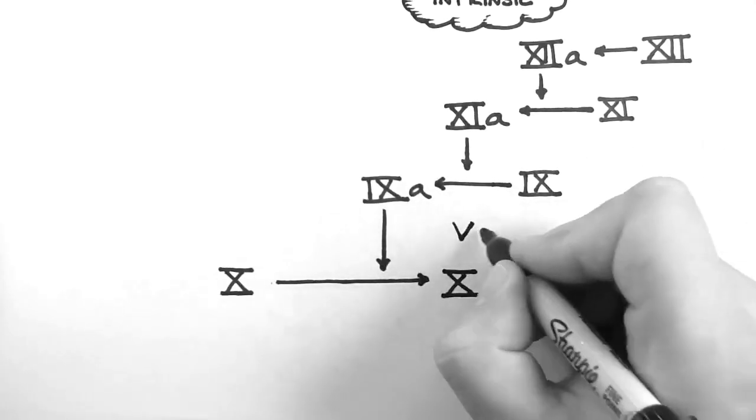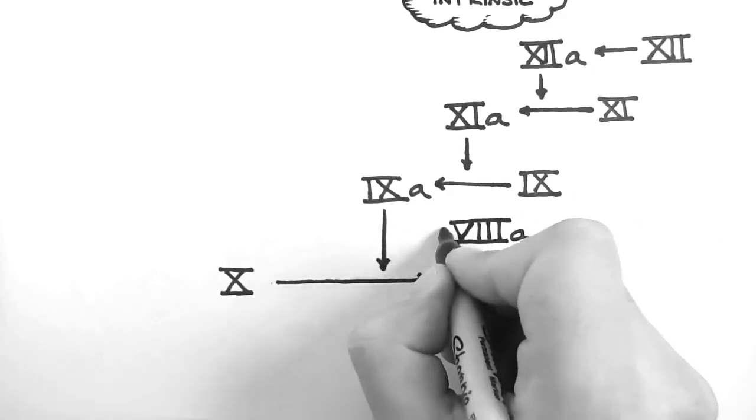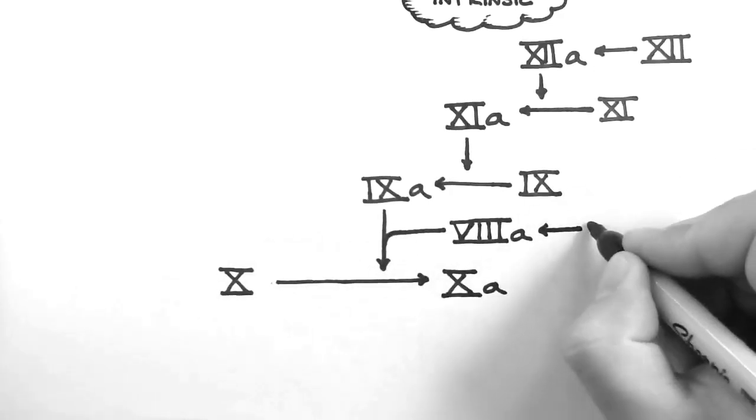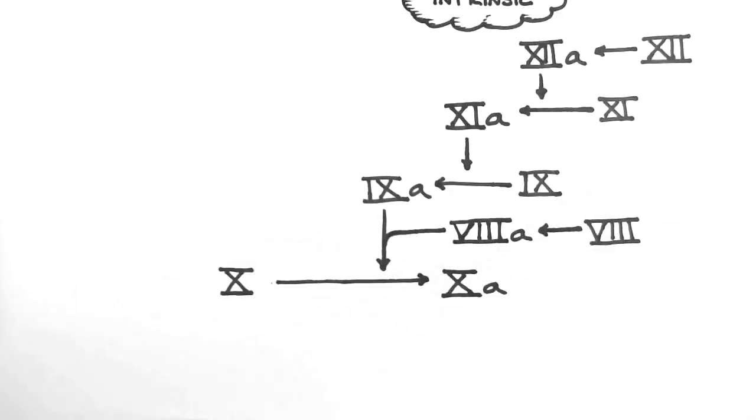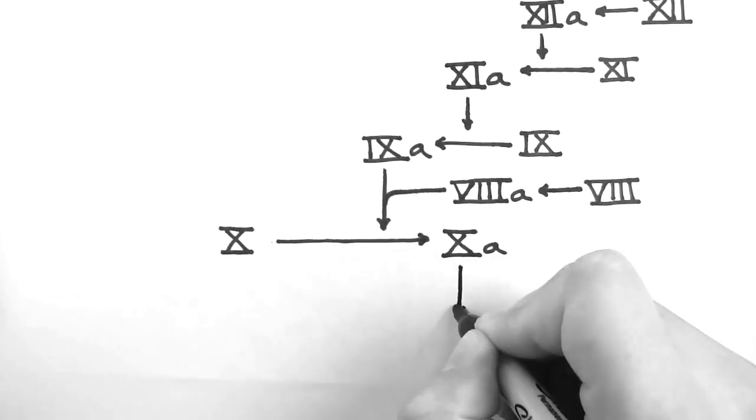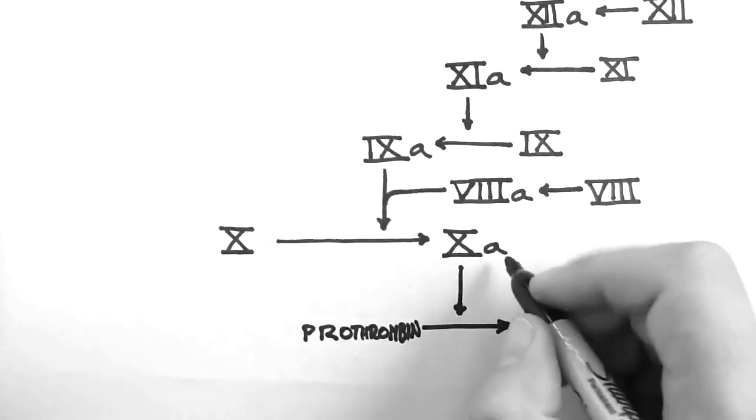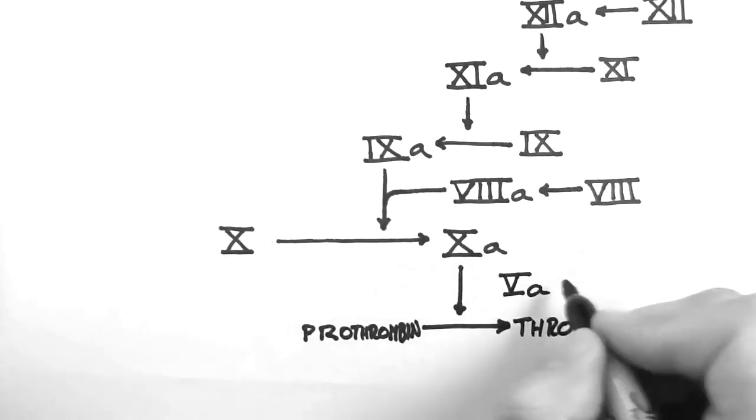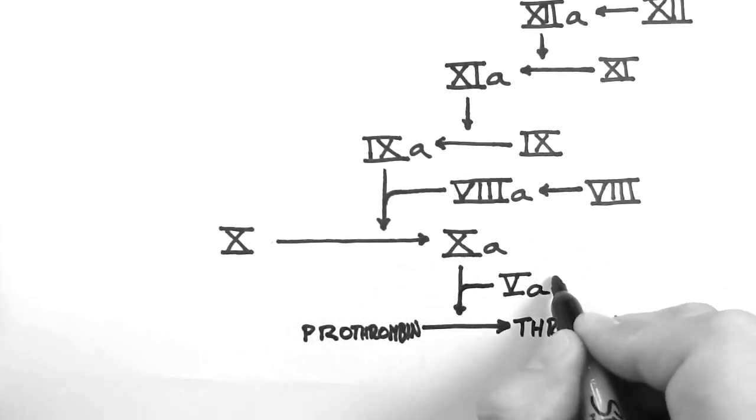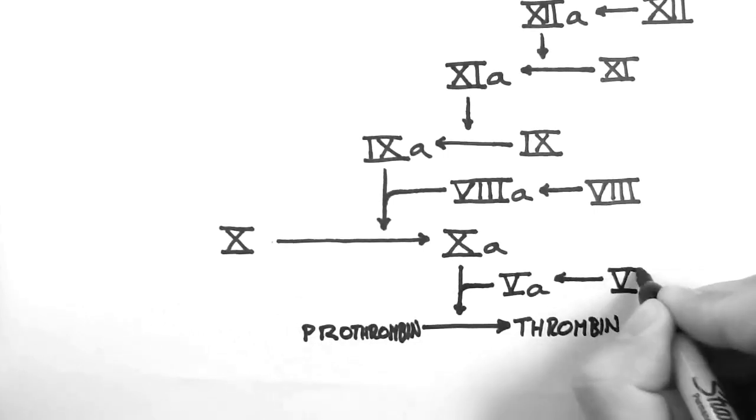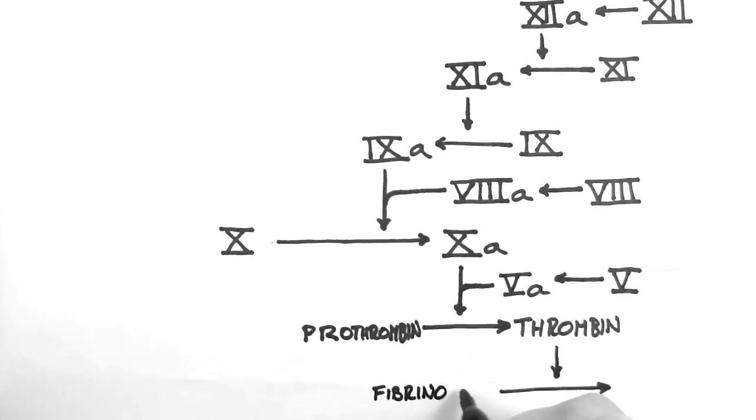But it does this with the help of factor 8a, which has been created from factor 8. Factor 10a can then convert prothrombin to thrombin, and it does this with the help of factor 5a, which of course has been produced from factor 5. Thrombin then converts fibrinogen to fibrin. Fibrin forms a mesh at the injury site to help produce the blood clot.